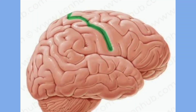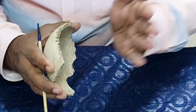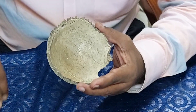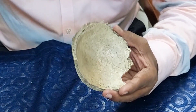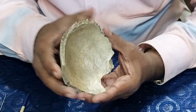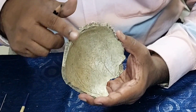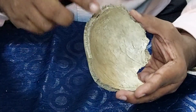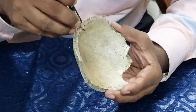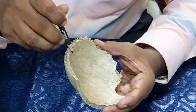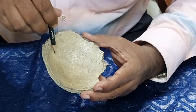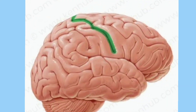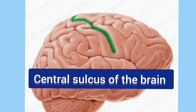If you are asked to draw a line on the parietal bone which corresponds to the central sulcus of the brain, you draw on the internal surface. Take a point about 4 to 5 centimeters behind the anterior superior angle on the superior border, then draw a line downwards and forwards for about 7.5 centimeters. This line corresponds to the central sulcus of the brain.